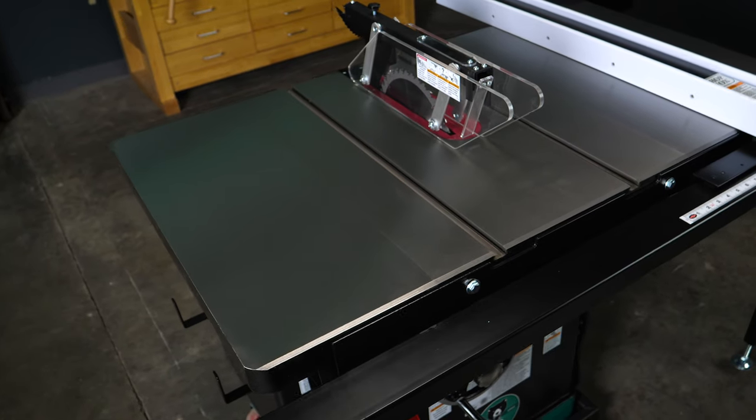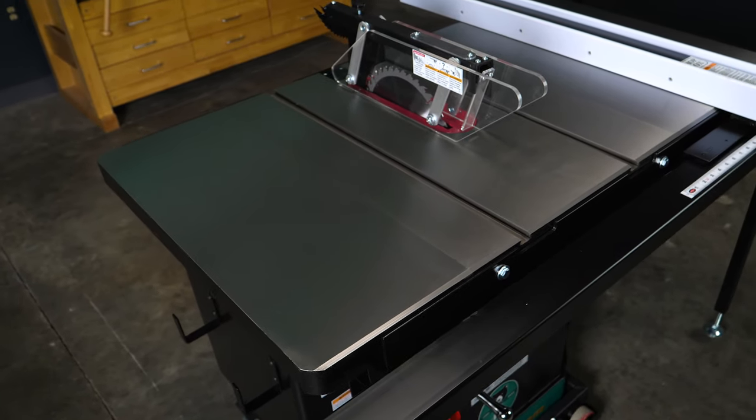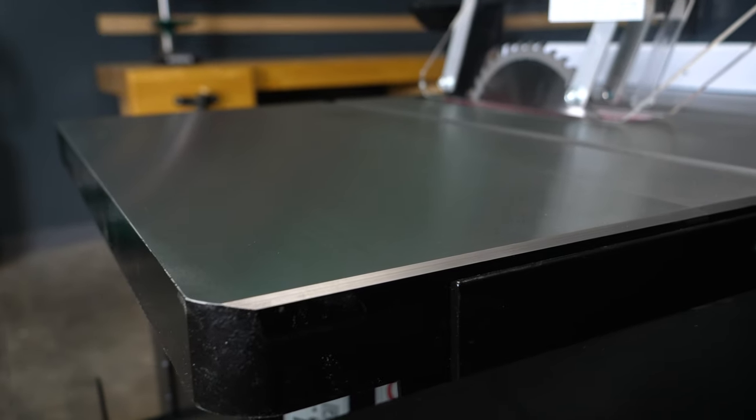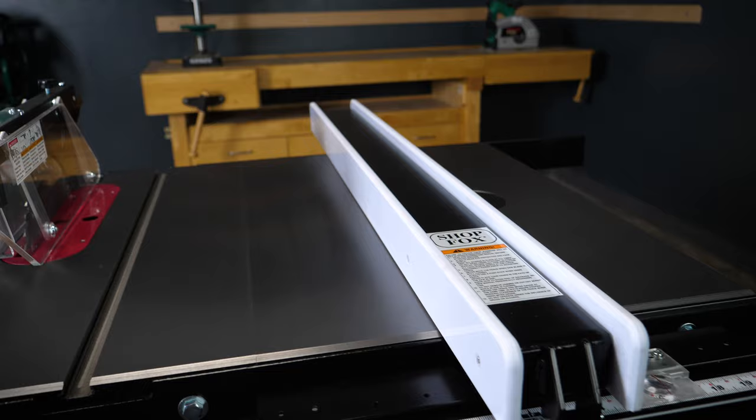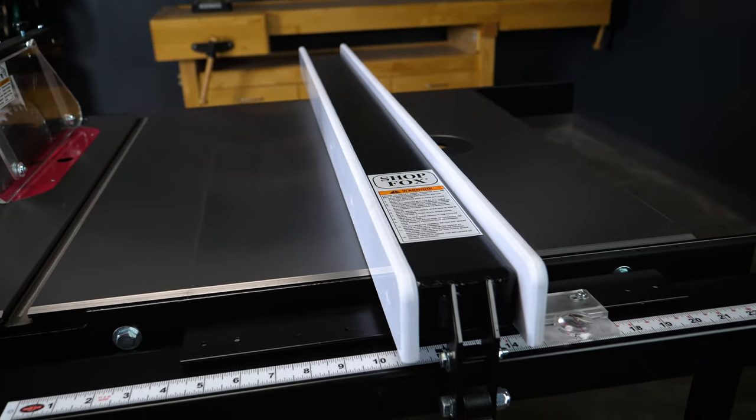The heavy-duty cast-iron table and extensions are precision ground for total flatness with beveled front edges for smooth board feeding. It comes with an easy-gliding ShopFox classic fence.